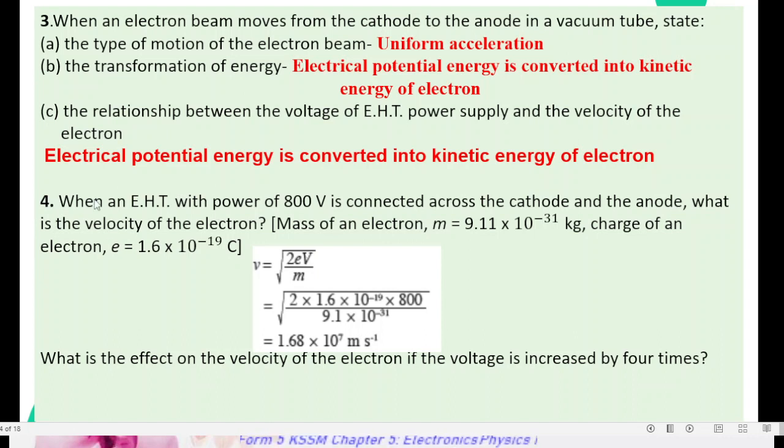So, for number 4, when EHT with power of 800V is connected across cathode and anode, what is velocity of electrons given M mass of electron and charge of 1 electron? Using the formula V equals to square root of 2EV divided by M, you just substitute the value of charge of 1 electron,